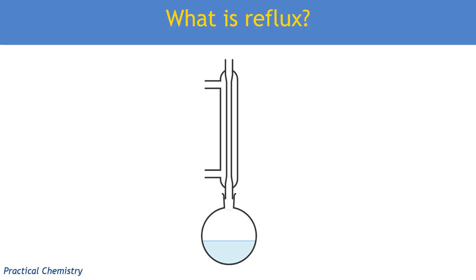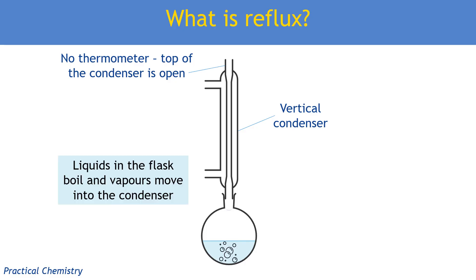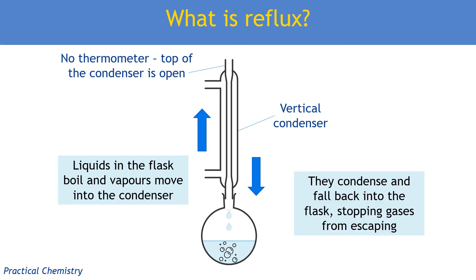Now let's move on to reflux or as it should probably be called heating under reflux. And this comes up in almost every organic reaction. So it's very similar. It includes a round bottom flask. It includes a condenser. But this time the condenser is vertical, connected directly to the top of the flask. Really important, very common mistake. Notice that there's no thermometer and the condenser is completely open at the top. That's so when we heat the mixture, any liquids that boil are going to travel up into the condenser. And then when they get there, because of the cold water around the condenser, they're going to condense and they're going to fall back into the flask. And so this stops any gases from escaping.